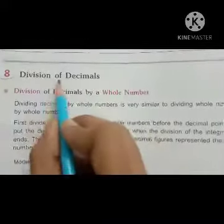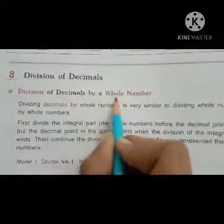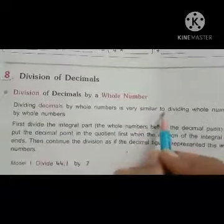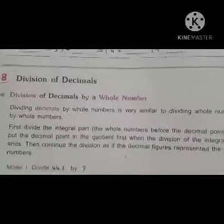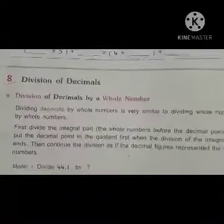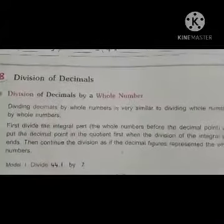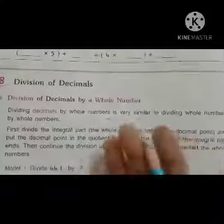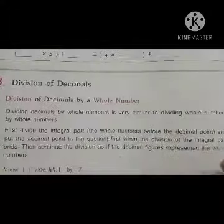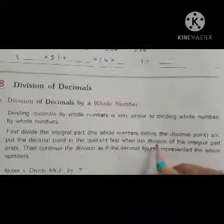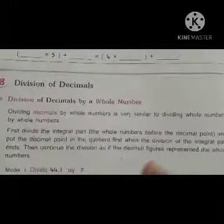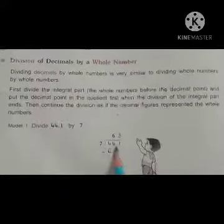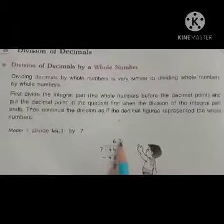Open your textbook page number 174 — Division of decimals. Division of decimals by a whole number is very similar to dividing whole numbers by whole numbers. First, divide the integer part — the whole numbers before the decimal point. Then put the decimal point in the quotient. For example: 44.1 divided by 7. After completing the integer part, take the decimal point to the quotient.